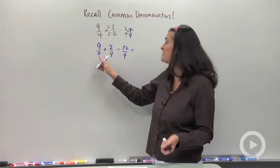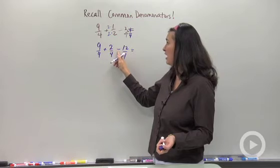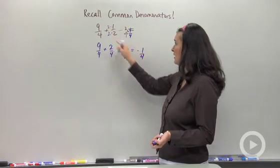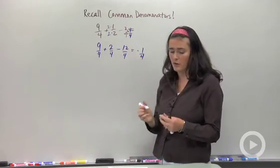Then you just look at the tops. 9 plus 2 is 11. 11 take away 12 is negative 1. So my final answer for that sum and difference is going to be negative 1 fourth.